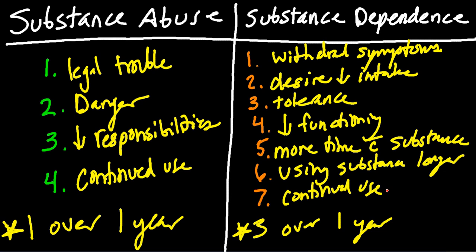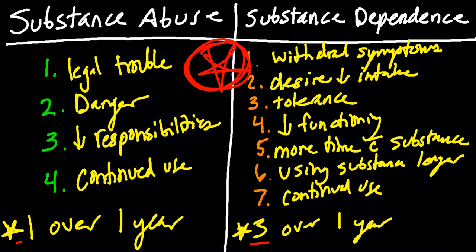That's the main difference between substance abuse and substance dependence. You really need to know this distinction for testing. You're going to get a question asking whether a patient is abusing a drug or dependent on it. Remember: you need at least one of the four criteria for abuse, and at least three of the seven criteria to be considered dependent.